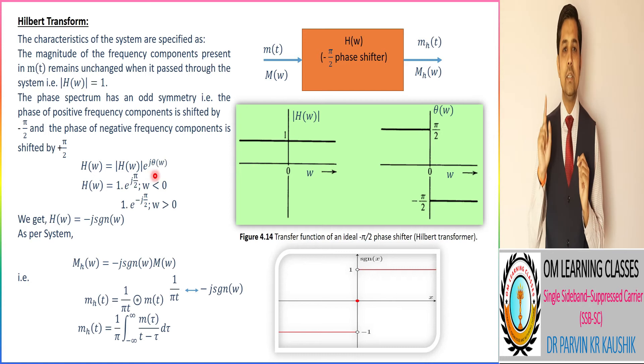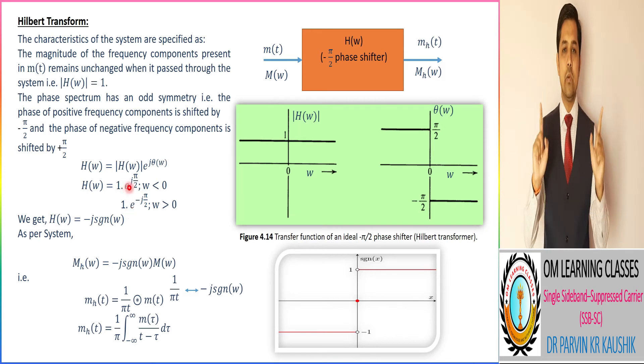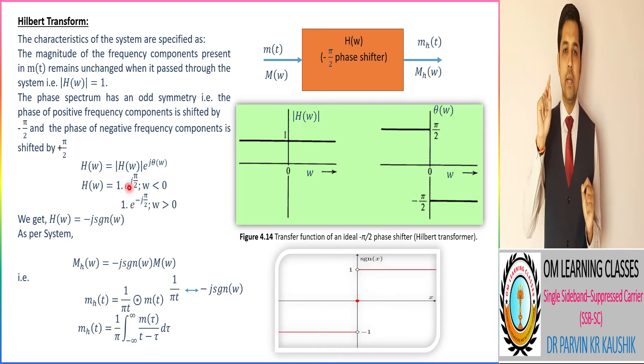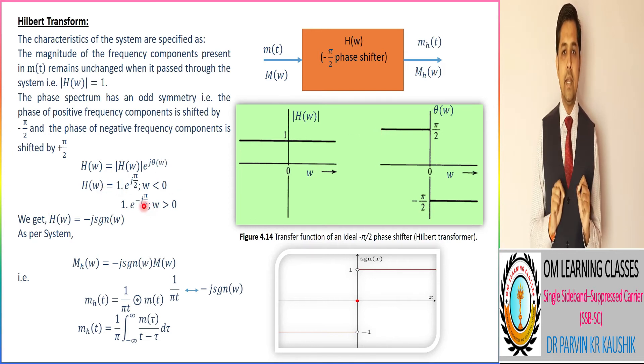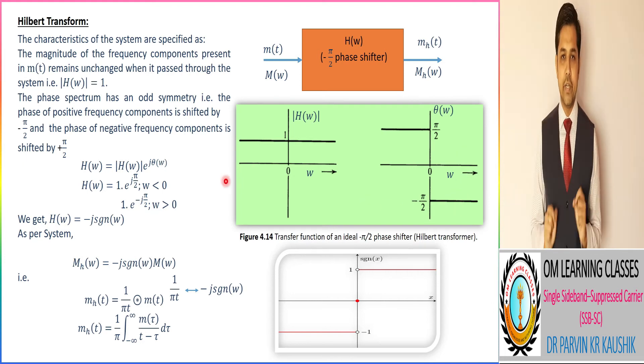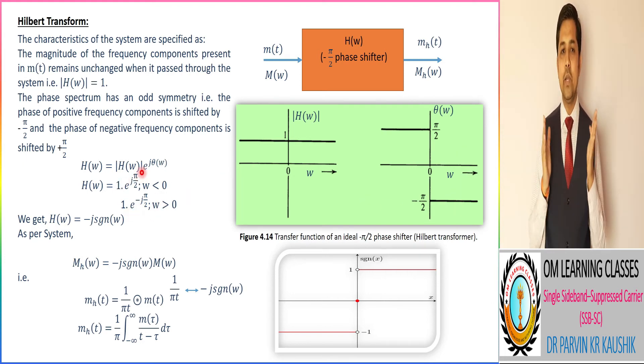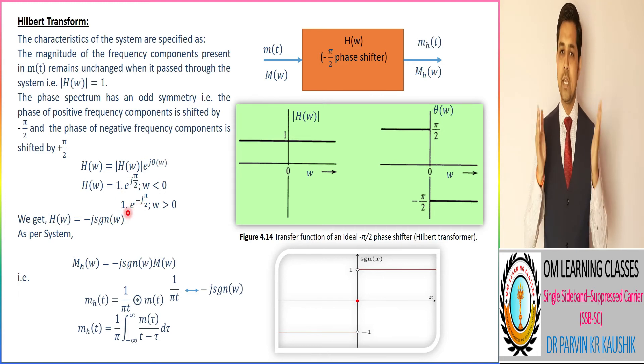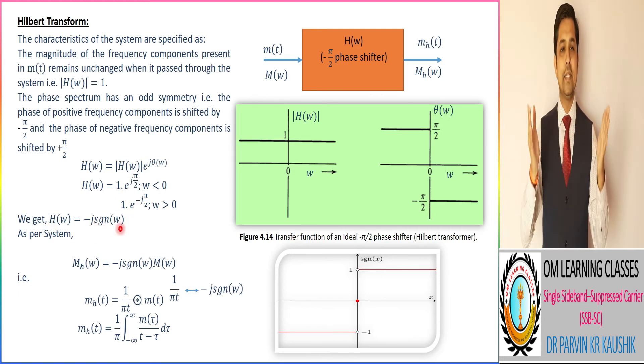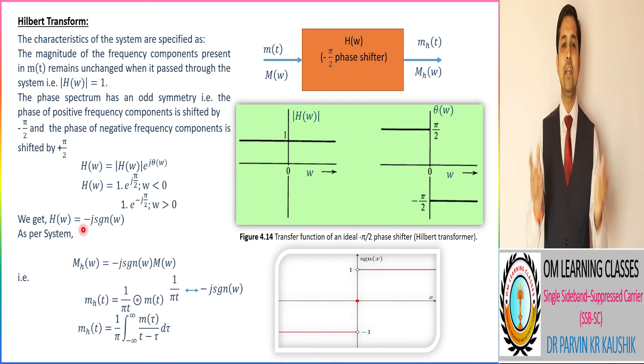So here we get H(ω) is equivalent to e^(jπ/2) for negative frequency and e^(-jπ/2) for positive frequency. And as we know, e^(jπ/2) is j, and e^(-jπ/2) is minus j. So further we get H(ω) is equivalent to minus j sgn(ω).